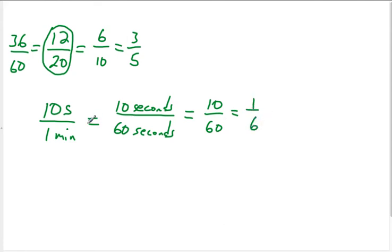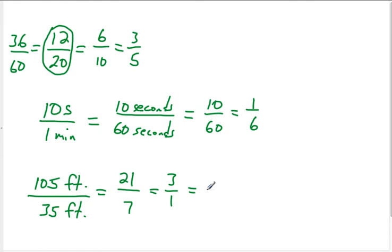Now if I ask you to reduce a fraction where the units were already the same, so if I said 105 feet over 35 feet, then we wouldn't have to deal with the units first. We could just deal with the fraction. So we could divide both of these by five, and I think we'd get 26 and 7, I believe. Let's see, 26, no that's not right. It's not 26, it's 21. There we go. 21 over 7, which would be 3 over 1, which in this case would just be 3.